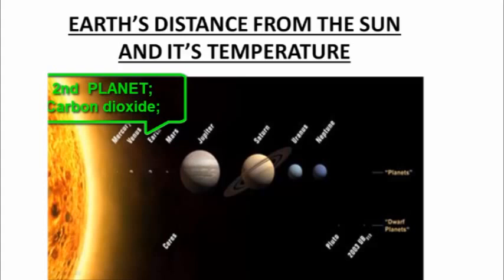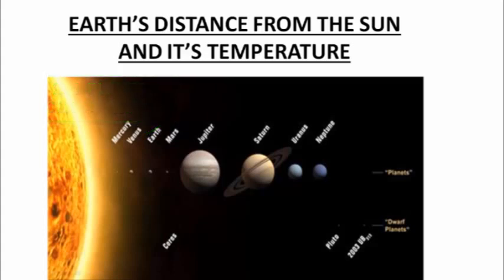Venus is the second planet from the Sun, but it is hotter than Mercury. This is because the atmosphere around Venus is mainly composed of carbon dioxide. The carbon dioxide produces greenhouse effect on the surface of Venus. Thus, the temperature on its surface remains very high. The Earth's atmosphere contains a very small quantity of carbon dioxide as compared to it.